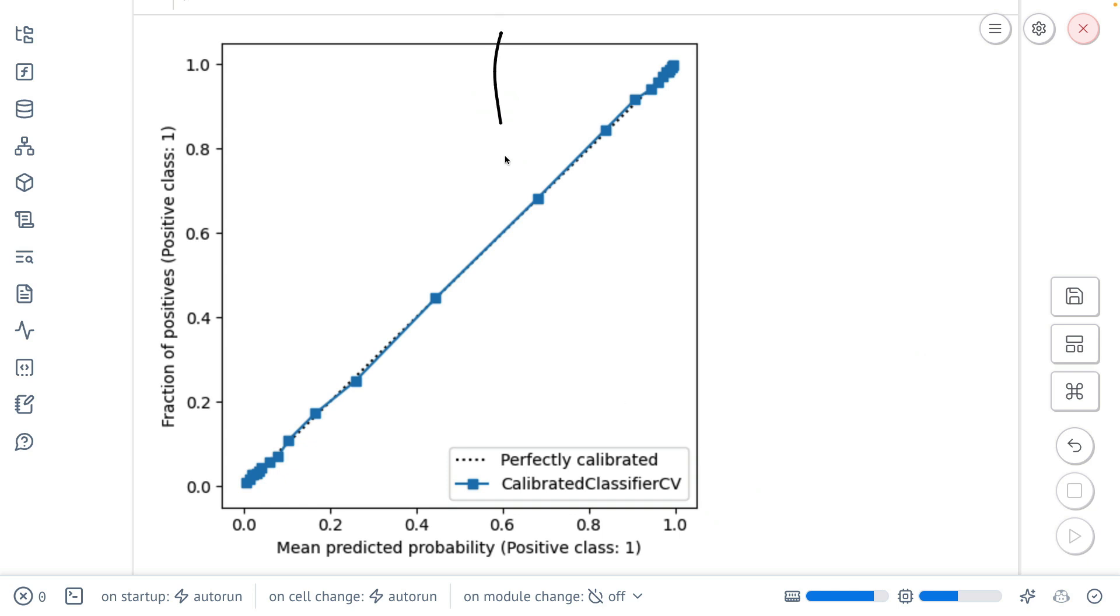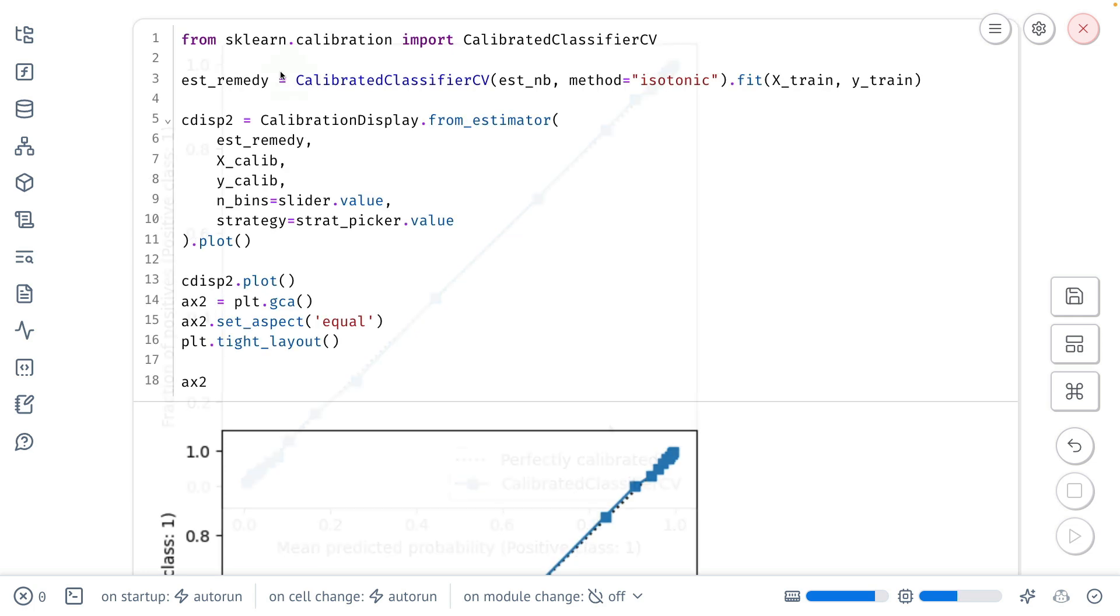I should stress that this is a somewhat extreme example on some simulated data. In real life, the trick that I'm about to teach you doesn't always guarantee that you're going to be this smack dab on the diagonal line over here. But nonetheless, I do think that this technique is useful enough to be generally applicable. And in particular, what we're going to discuss is this calibrated classifier CV estimator that allows you to wrap around an existing estimator to then give you an estimator that is just a bit better calibrated.